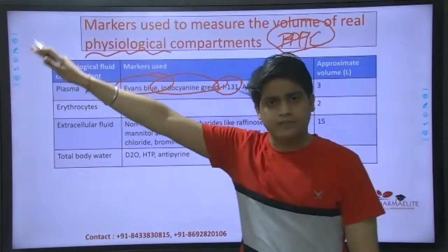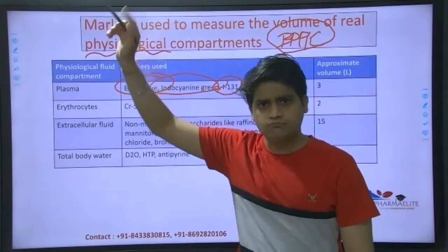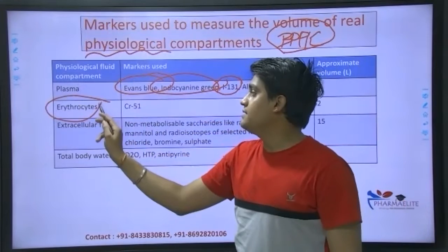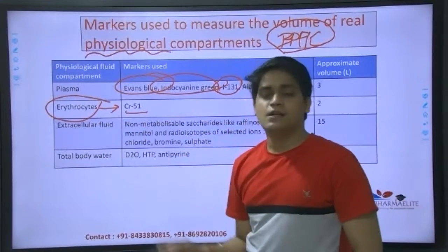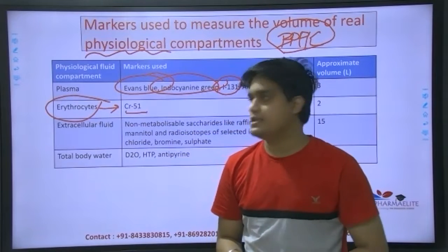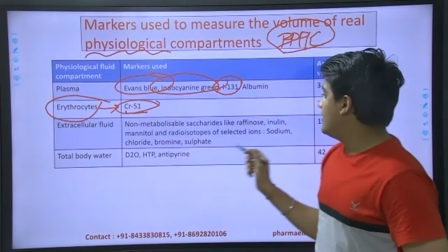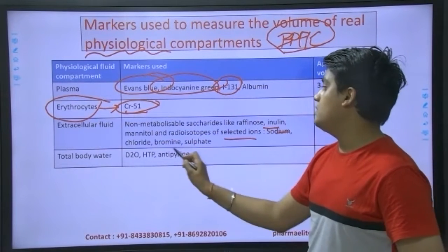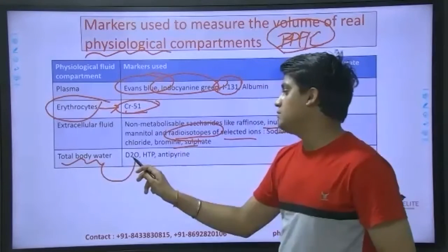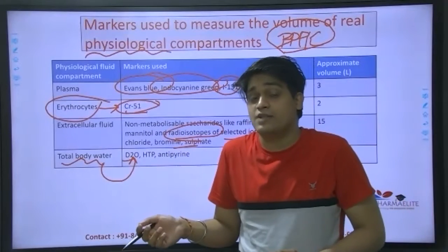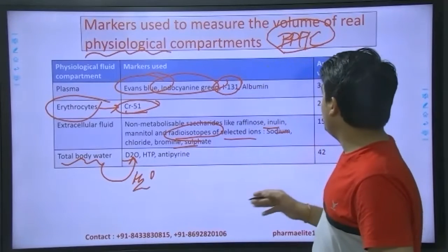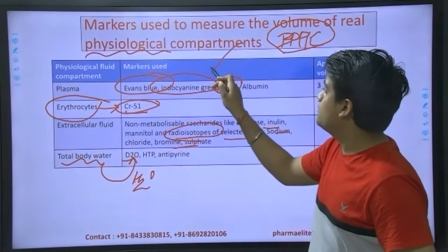To measure GFR, inulin is used - that's important and asked. Same way, if you want to measure RBC levels, Cr-51 is used. You've seen erythrocytes - the concentration of RBCs, how is that being done? They use a marker. Same way, if you want an idea of extracellular fluid, you have different ions and different radio-isotopes to identify that as well. And for total body water, the isotope D2O - which is isotope water only, H2O - is used.